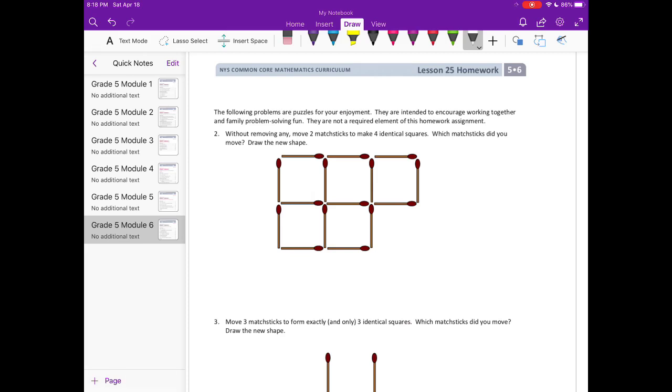So the two matchsticks that I removed were this one, and I also got rid of this one. And I moved them to here. I put one right there and another one right here. So that makes four identical squares: one, two, three, and four.